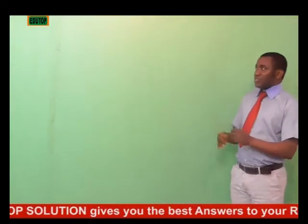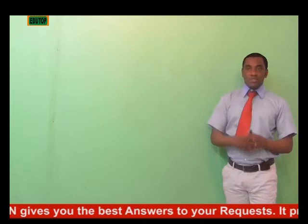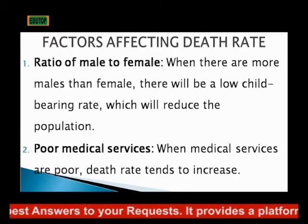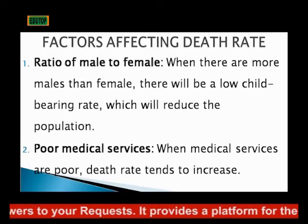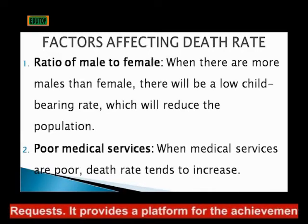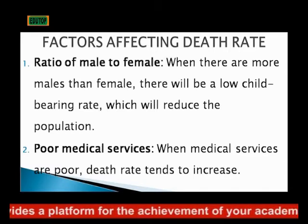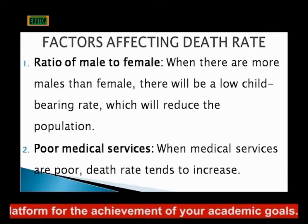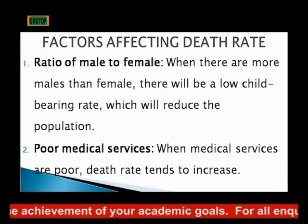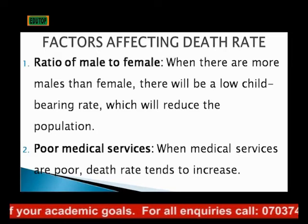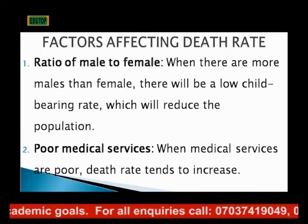What are the factors that are responsible for death rates in a particular society? One, we have the ratio of male to female. In any society where there are more males than females, there will be low child-bearing rates, and therefore the population will be reducing. Second, we have poor medical service. When there is no proper and good medical service in a society, the death rate will be increasing because people don't have access to medical service.